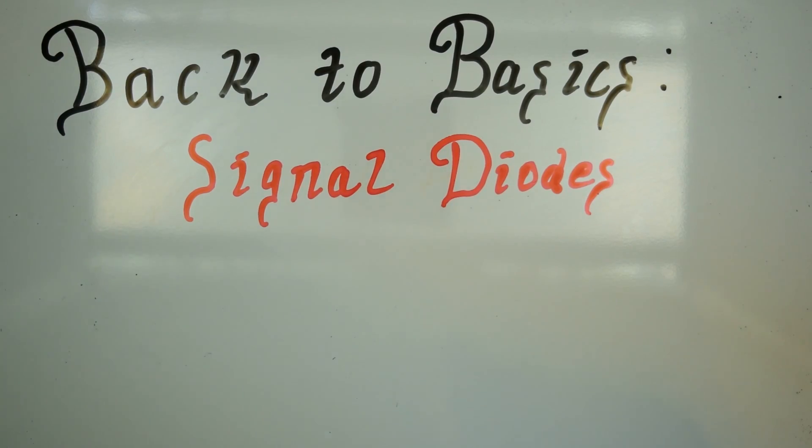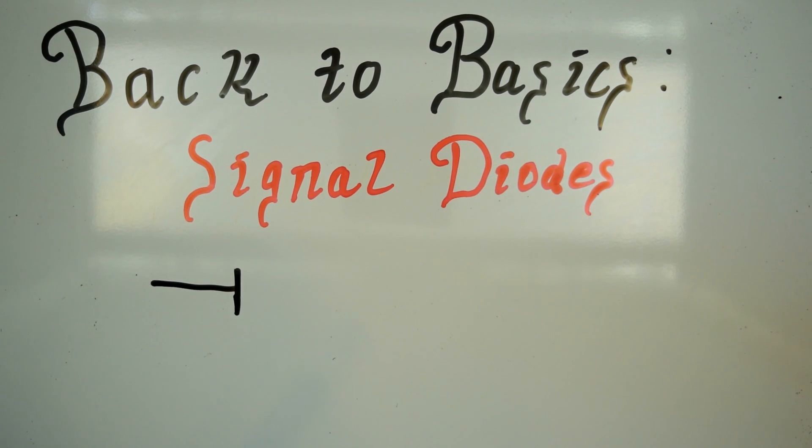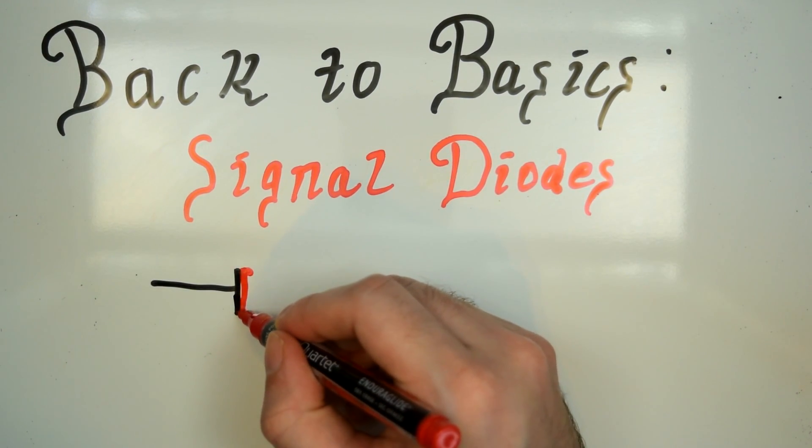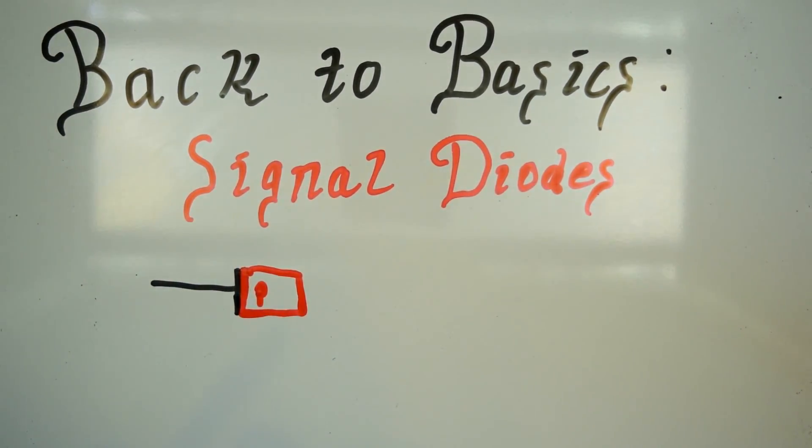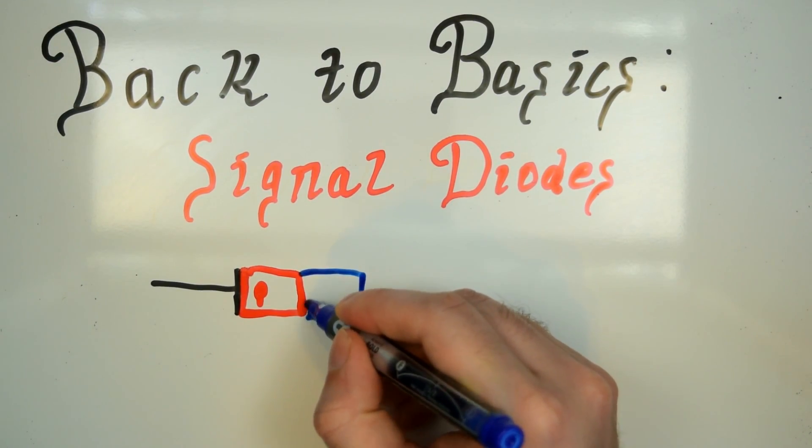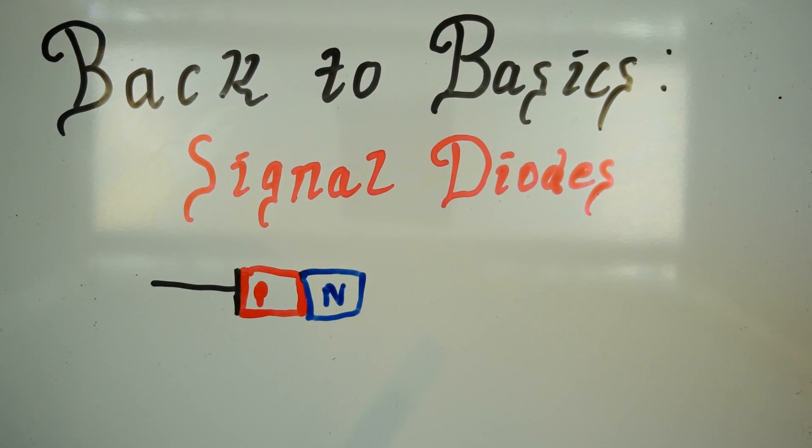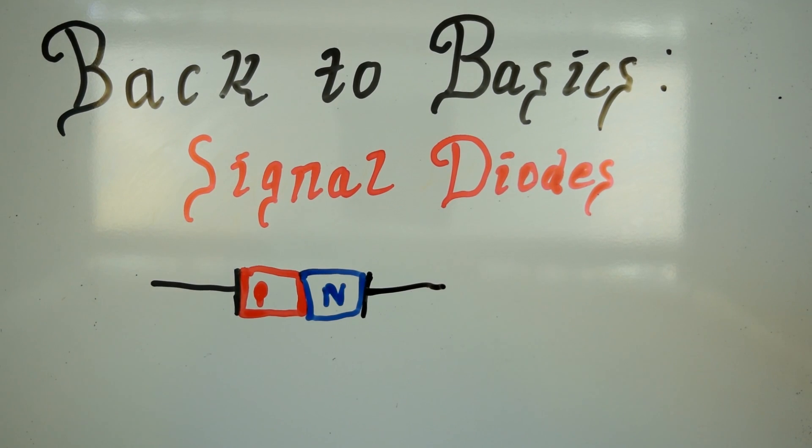Now in the past we've talked about your standard PN junction diode. Let's bang out a quick demonstration here. P-type, I'll go ahead and grab the blue marker here, the N-type, and then we have the other side. So this is your standard general diode construction.